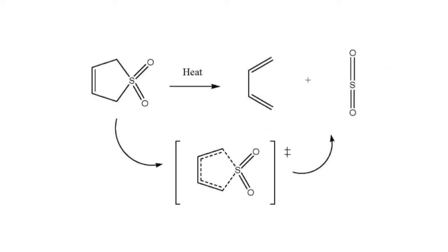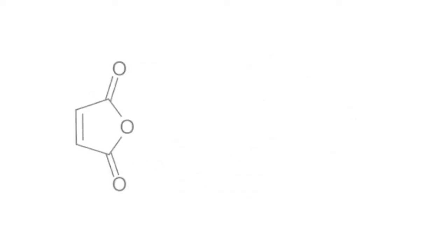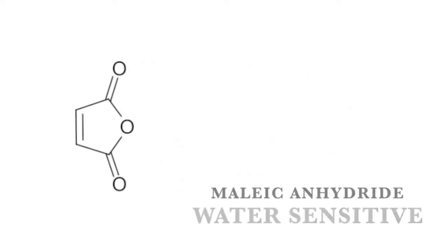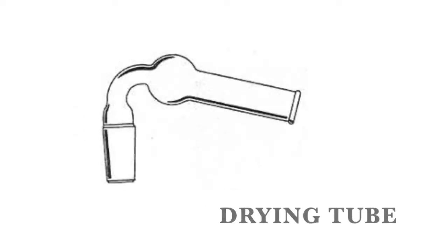1,4-butadiene is a gas, so we'll have a hard time measuring it. Instead what we do is we use 3-sulfolene. 3-sulfolene decomposes into 1,4-butadiene with the presence of heat. Now maleic anhydride is water sensitive, so we don't want to wash any of our glassware today if you haven't washed it already. If you insist on washing it, make sure you use a little bit of acetone to dry it out, otherwise you're going to have some problems. As an additional precaution, what we're going to do is make ourselves a drying tube to make sure no water comes in during the reaction.